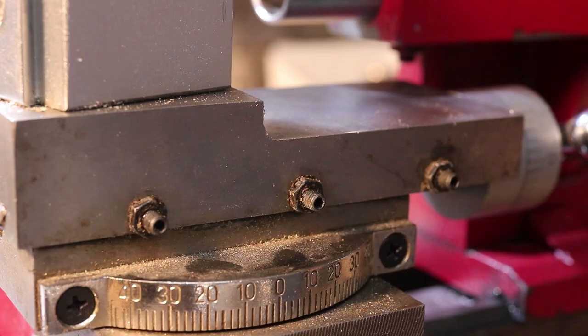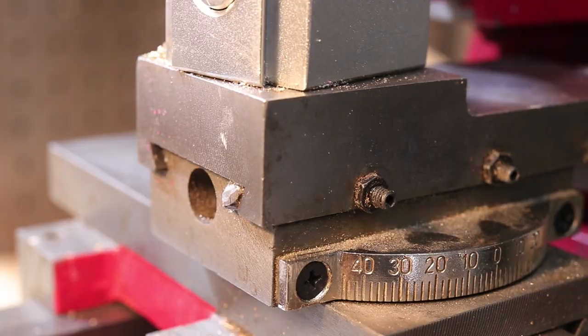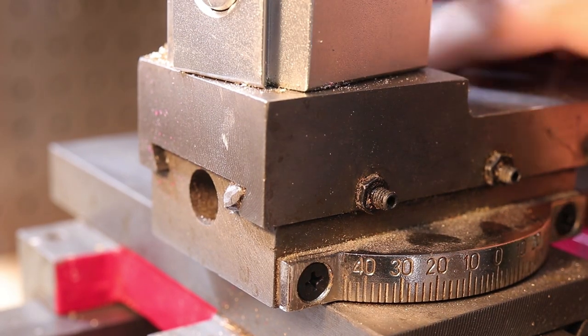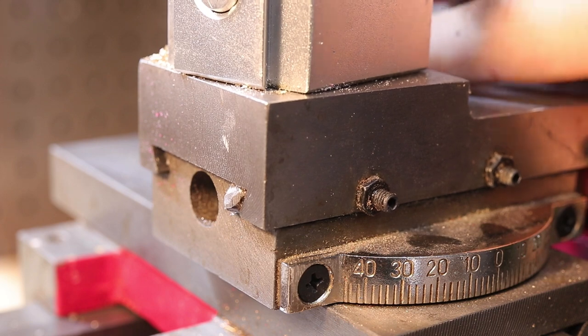Tip number three: adjust the Gibbs screws. This is probably the biggest thing you can do to improve the accuracy and surface finish of your parts because in my experience the Gibbs screws were very poorly set up from the factory. A quick explanation of what we're doing here is this.